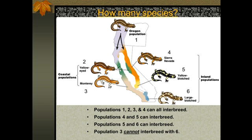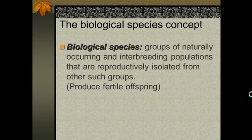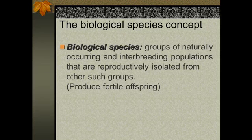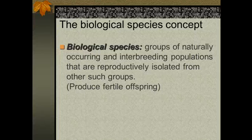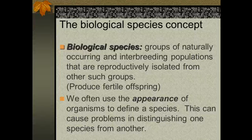This is called a ring species, and it comes about because of the isolation that has happened between those on either side of the Sierra Nevada Mountains. This brings us to what we call the biological species concept. Biological species — species in the plural — are groups of naturally occurring populations that interbreed, but are reproductively isolated from other groups. Any groups that can naturally interbreed and produce fertile offspring we say are one species. We often use appearance to tell a species apart, but this does, in fact, cause problems in determining one species from another.